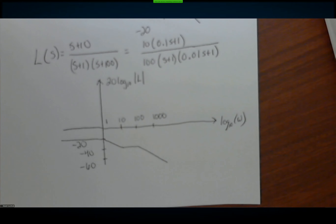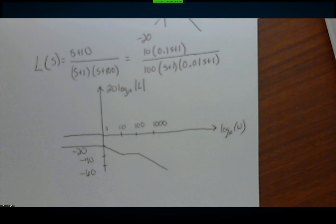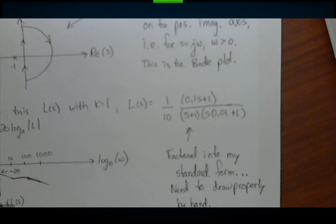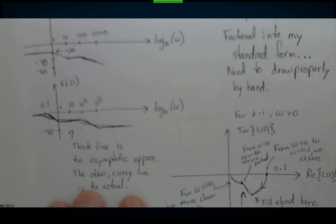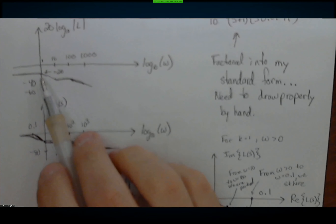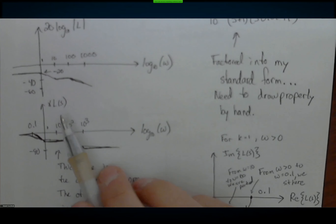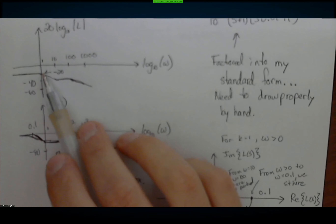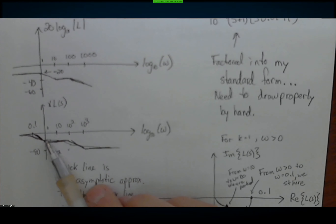Now what does the phase look like? I've got a pole at omega=1. The angle starts to fall about a factor of 10 below that pole, so I start to fall at about 0.1 radians per second. By the time I reach the pole, I should be at roughly minus 45 degrees. My zero is at 10, so the zero causes the phase to rise 90 degrees, beginning a factor of 10 before it. Between 0.1 and 10, the pole is causing a 90-degree fall; between 1 and 100, the zero is causing a 90-degree rise. Net effect in the decade from 1 to 10: roughly no change.